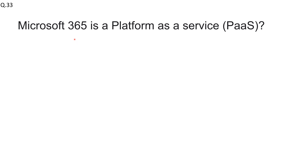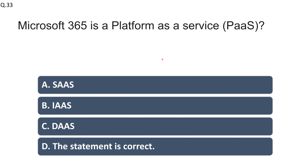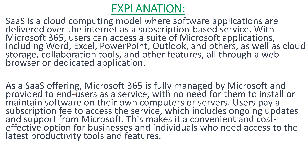Question number thirty-three: Microsoft 365 is a Platform as a Service — true or false? The statement is incorrect. Microsoft 365 is Software as a Service. In the SaaS model, software applications are delivered over the internet on a subscription basis. Microsoft 365 users can access applications such as Word, Excel, PowerPoint, and Outlook through a web browser, and the offering is fully managed by Microsoft.